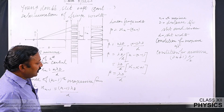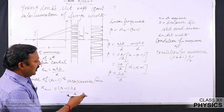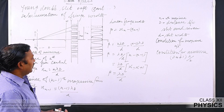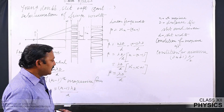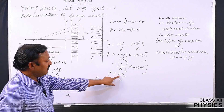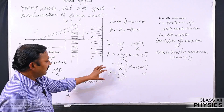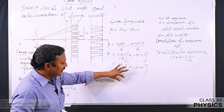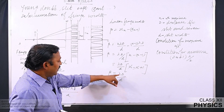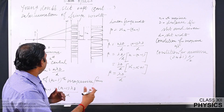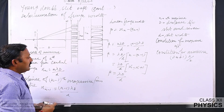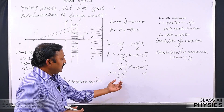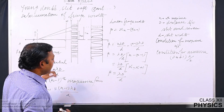Fringe width depends upon lambda as well as D and small d. Fringe width increases with wavelength — if instead of monochromatic light we use white light, the wavelength for white light consists of 7 colors. For violet light the wavelength is less, so the fringe width for violet light is smaller compared to the fringe width of red light, keeping small d and capital D the same. Fringe width also increases with D, the separation between slit and screen, and by decreasing d the slit separation we can increase the fringe width.